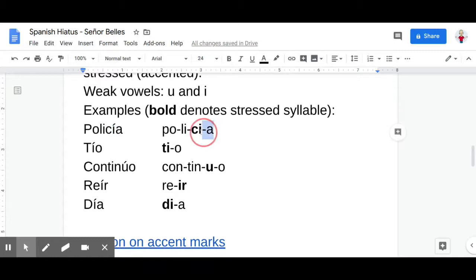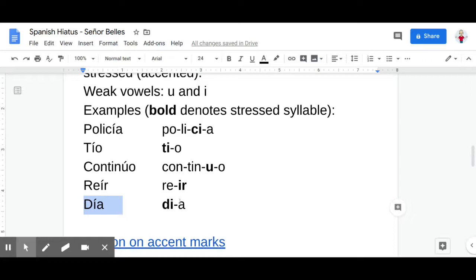Next one we've got tío, continuo, reír, and you've probably learned this word before, día, like buenos días, right? So all those times we have a weak vowel, an I or a U with an accent mark on it next to a strong vowel. That's the second type of hiatus.